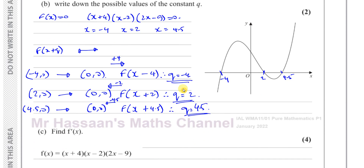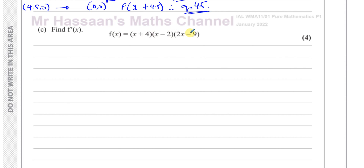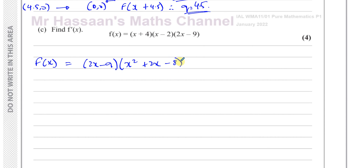Part C says find f'(x). To differentiate this function we need to expand the brackets and write them as separate terms. Let's write f(x) in an expanded form — first expand the first two brackets (x+4)(x-2) to get x²+2x-8, and keep (2x-9) separate.